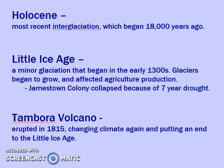In terms of the current interglaciation, we call that the Holocene. Within the Holocene, we've had a little ice age — a brief period of glaciation. It began in the early 1700s with much colder temperatures and less rain; there were droughts all over the world. It impacted migrations of people, exploration, and agricultural use. We think the Jamestown colony collapsed purely because of a seven-year drought resulting from the Little Ice Age. The event that really stopped the Little Ice Age was the eruption of the Tambora volcano, which changed the climate and ended that period.